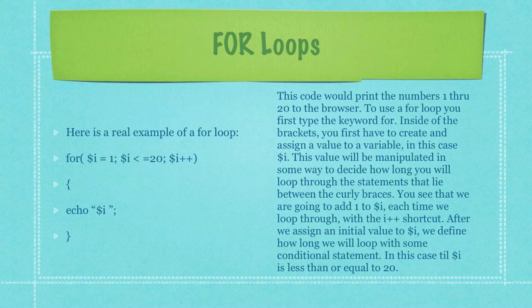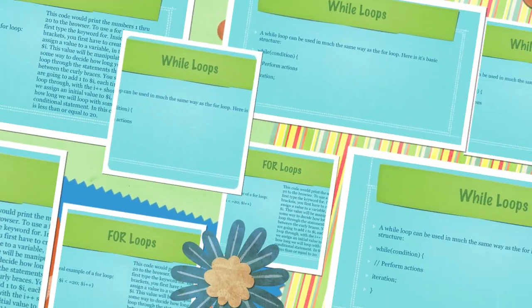This value will be manipulated in some way to decide how long you will loop through the statements between the curly braces. We are going to add 1 to the variable i each time we loop through with the iterator shortcut. After we assign an initial value to i, we define how long we will loop with a conditional statement — in this case, till the variable i is less than or equal to 20.